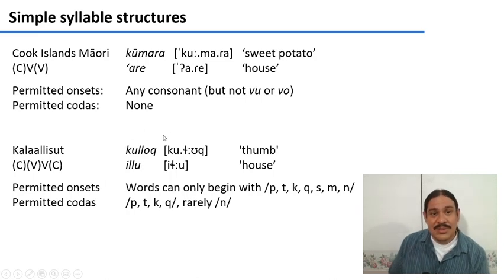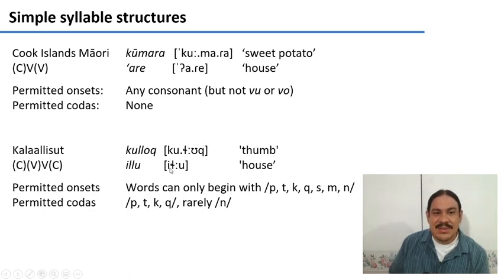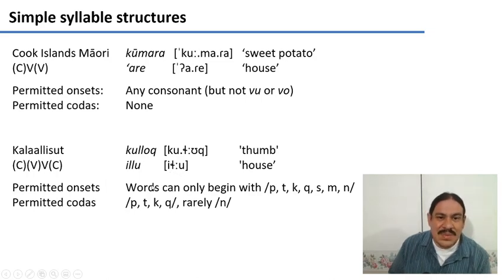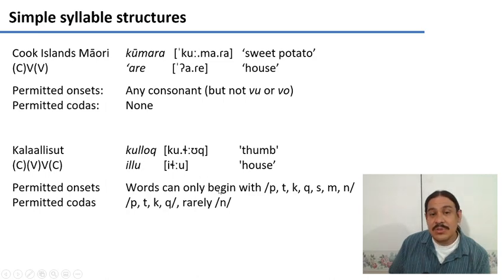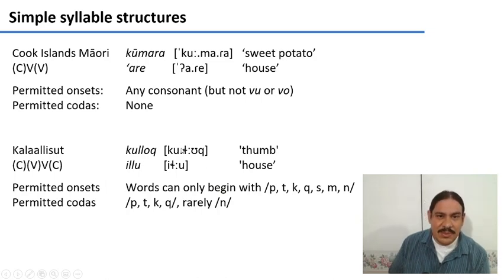Kalaallisut can have a coda. For example, you have a word like kūhluk, meaning thumb, where the last syllable is consonant-vowel-consonant. And you have words like iķķu, meaning house, where the first syllable is a vowel and the second syllable is consonant and a vowel. Not all sounds are legal for you to begin a word with — you can begin a word with p, t, k, but not with the fricative ļķ; that one cannot go at the beginning of a word.